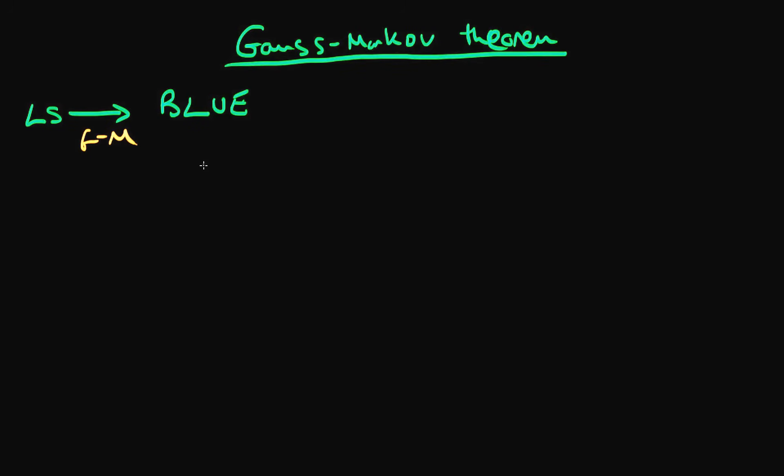Stated another way, this means that there are no other linear unbiased estimators which have a better efficiency than least squares. So it's quite a powerful theorem and I think it's quite important that we look into how it's actually proved.